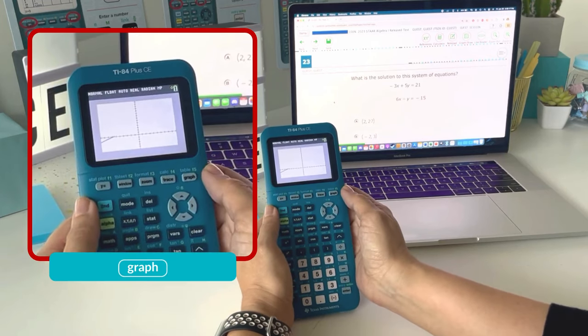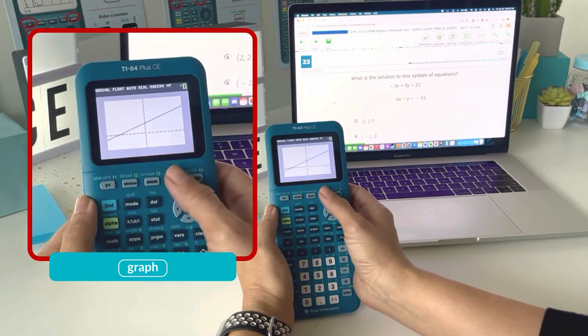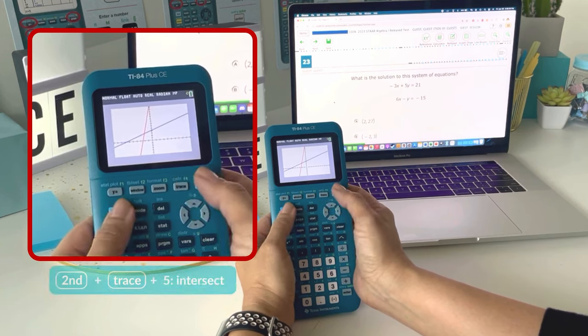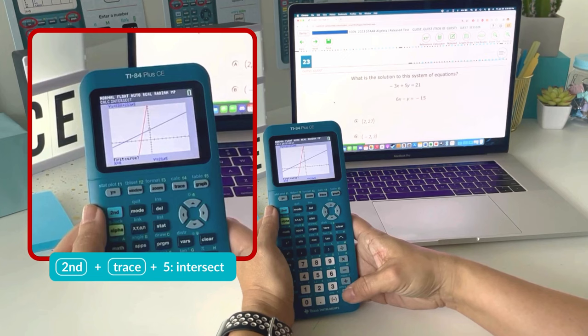I can find the solution of these on a graph by finding the intersection point. Once they're graphed, I'm going to choose second trace to calculate the intersection point by choosing number 5.